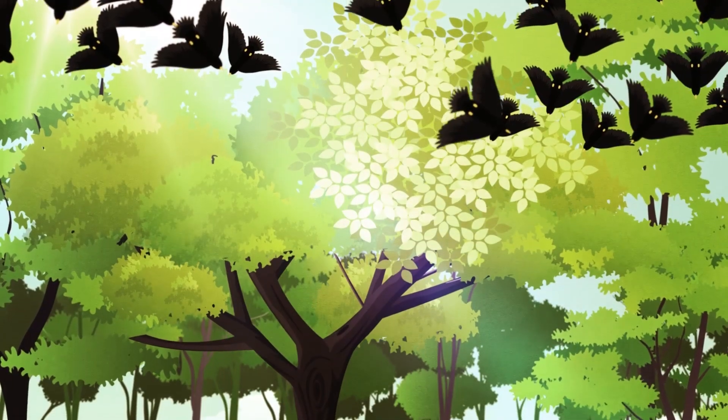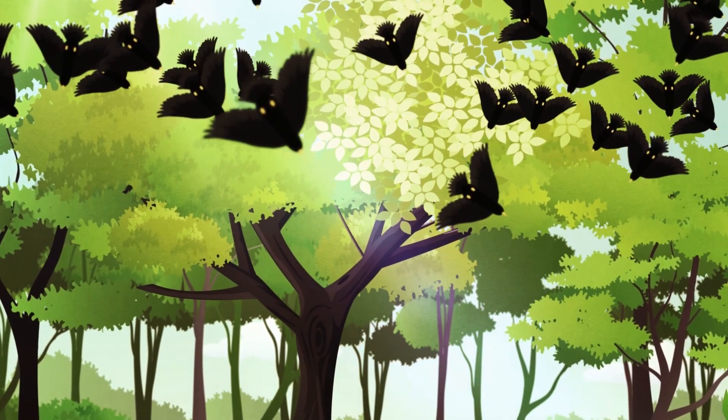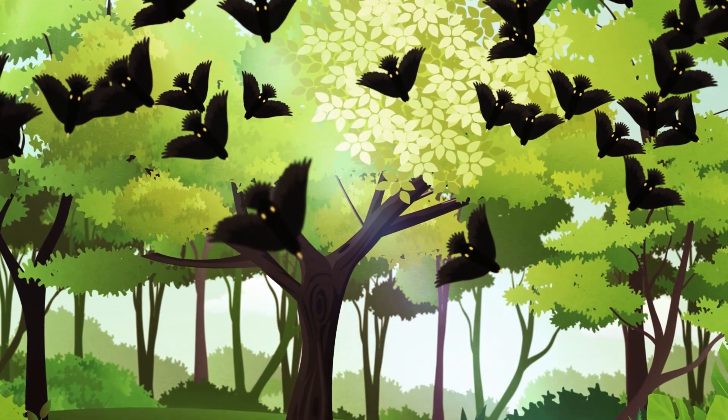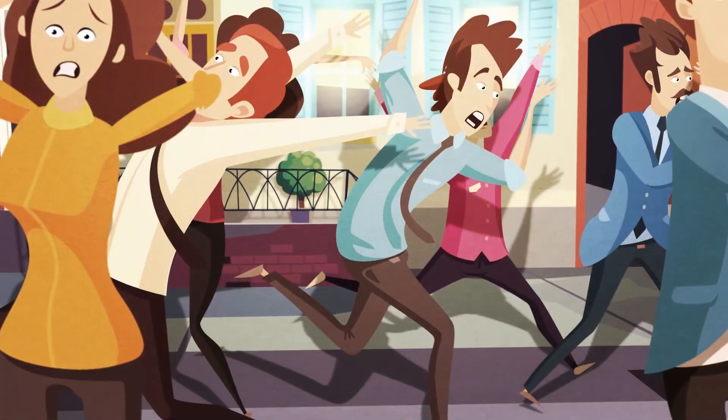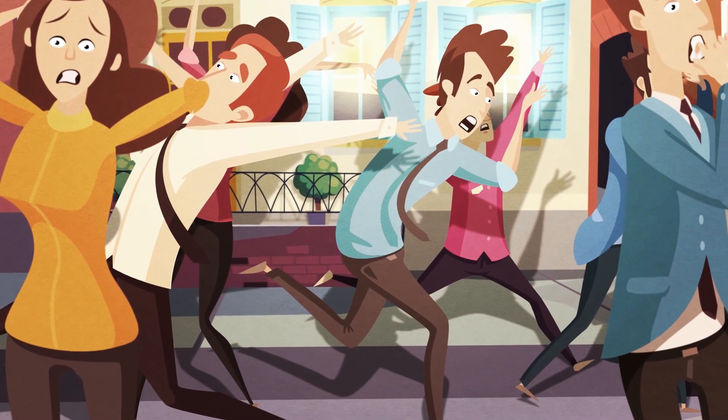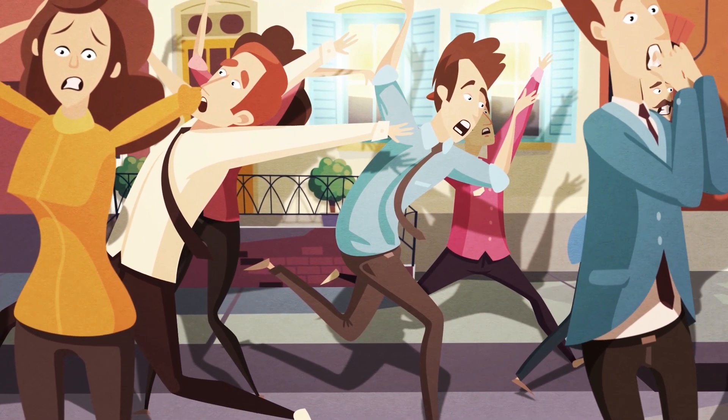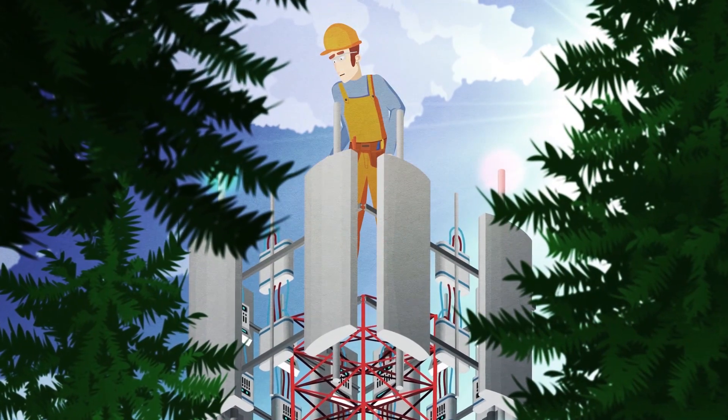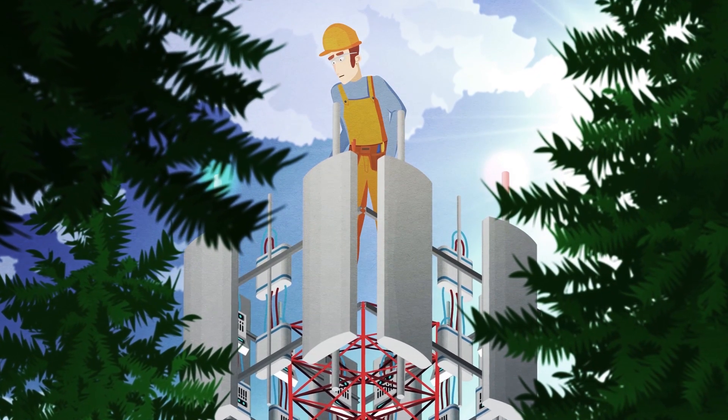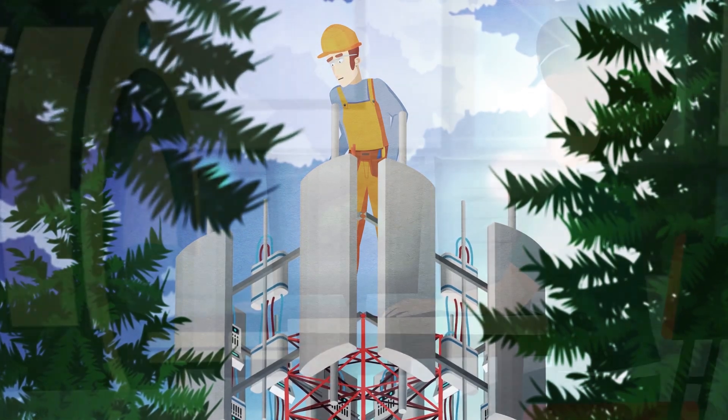In 2018, different news websites around the world wrote about 300 starlings that died during a 5G test in the Netherlands. This grew into a series of internet rumors, according to which 5G kills all life. In reality, the two episodes were not related, because the networks were tested a few months after the birds had died.